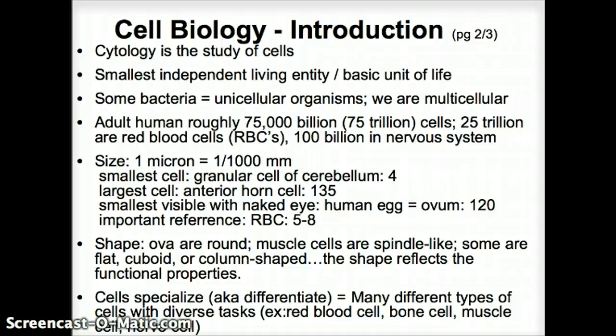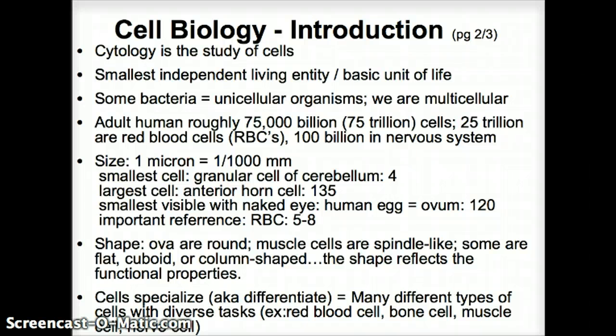We have approximately 75 trillion cells in our body. 25 trillion of those are red blood cells, and we have about 100 billion cells in our nervous system. That's a lot of cells that we are made up of.